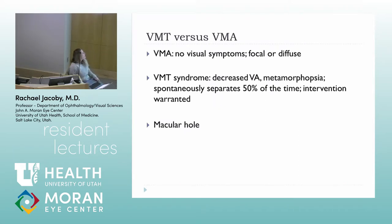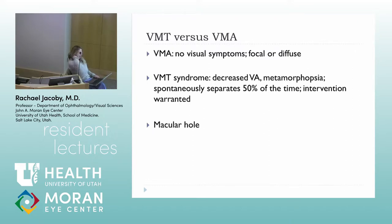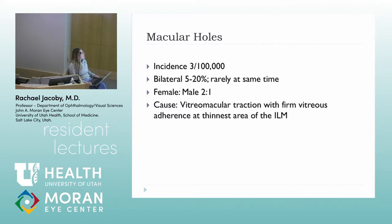For vitreo-macular adhesion, patients really have no visual symptoms. It can be focal, with just a tiny elevation over the fovea, or a more broad-based adhesion. For vitreo-macular traction syndrome, patients have decreased vision and metamorphopsia. About half the time it can separate on its own, but if there's a decline in vision, intervention — most likely surgery — would be warranted.